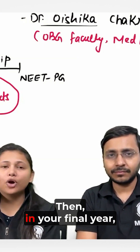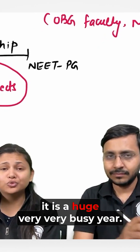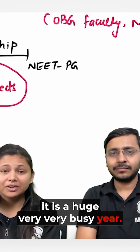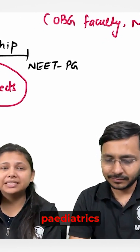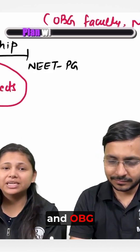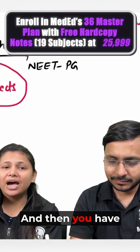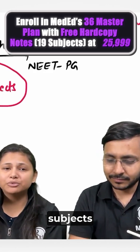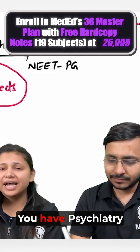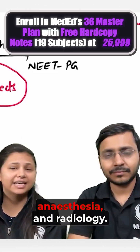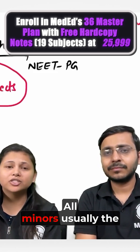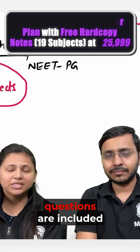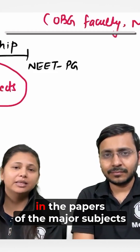In your final year, it is a very, very busy year. You have four major subjects: PEDS, Medicine, Surgery, and OBG. And then you have the SARPO subjects — Psychiatry, Derma, Ortho, Anesthesia, and Radiology. All are minors; usually the questions are included in the paper of the major subjects itself.